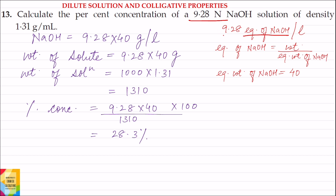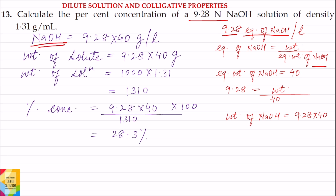So equivalents of NaOH is given, that is 9.28, and equivalent weight of NaOH we know, that is 40. So we can write: 9.28 is equal to weight of NaOH divided by 40. From this, weight of NaOH is equal to 9.28 into 40 grams per liter of solution.